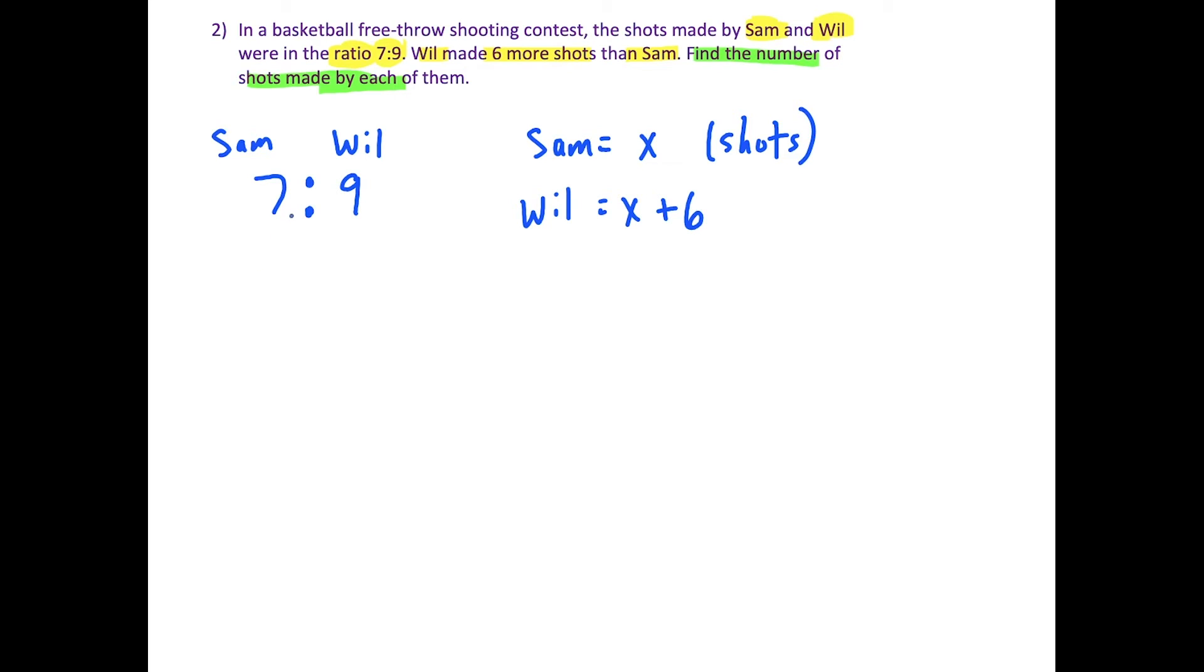So then we combine all this information. The ratio of Sam to Will is 7 over 9. But remember, this top part is for Sam, the bottom part is for Will, and we're also told that if Sam made x shots, Will made 6 more, made x plus 6.